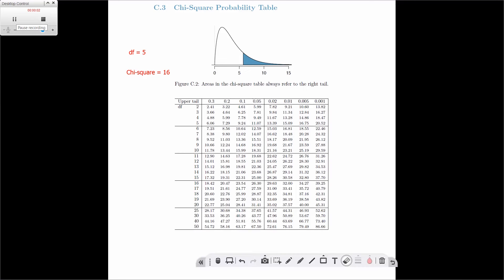So in this video, we're discussing the chi-square probability table. Given that we've got a degree of freedom of 5 and a chi-square value of 16, we want to find the p-value.